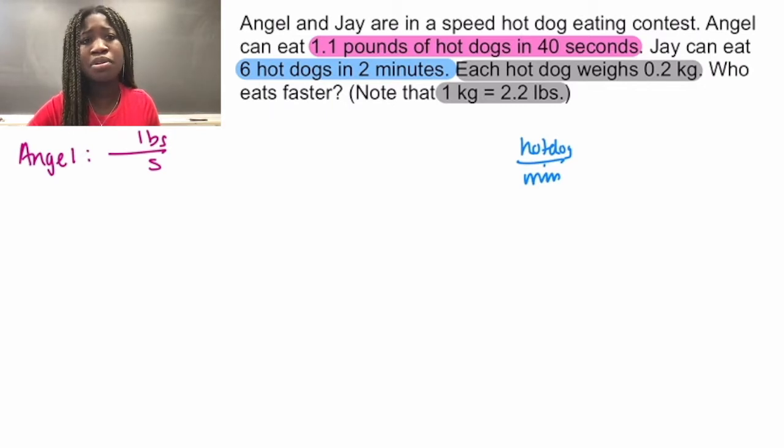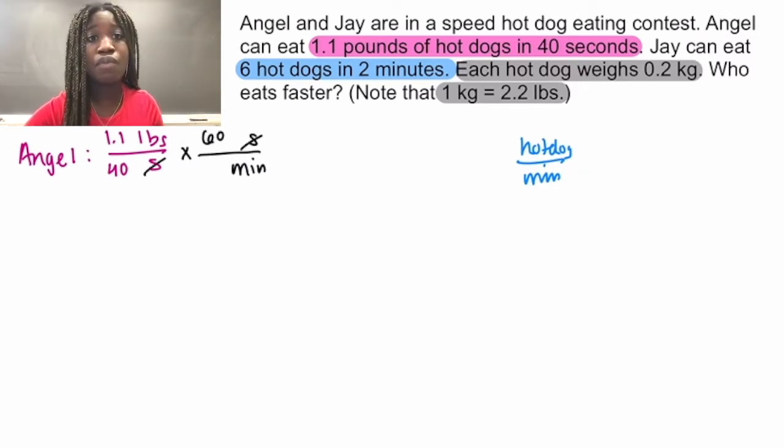Let's input the information that we know from our problem. We know that Angel can eat 1.1 pounds of hot dogs in 40 seconds. Now let's focus on converting the time. We are in seconds right now and we want to get to minutes. So let's put seconds on the top and minutes on the bottom, so that the seconds can cancel. We also know that there are 60 seconds in 1 minute.